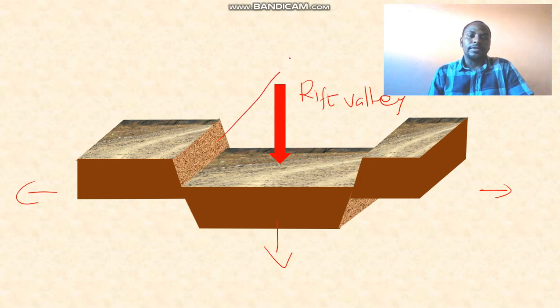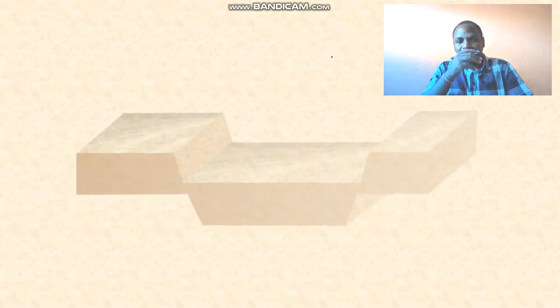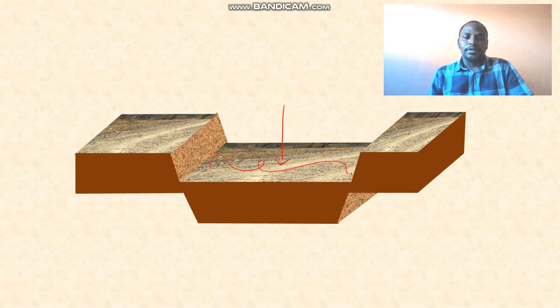Here are the sharp ends that now form the scarp slopes which develop during the formation of the rift valley. Let's now see a fully developed rift valley through the same process. This is now the broad valley which we refer to as a rift valley, and here we have the escarpments.